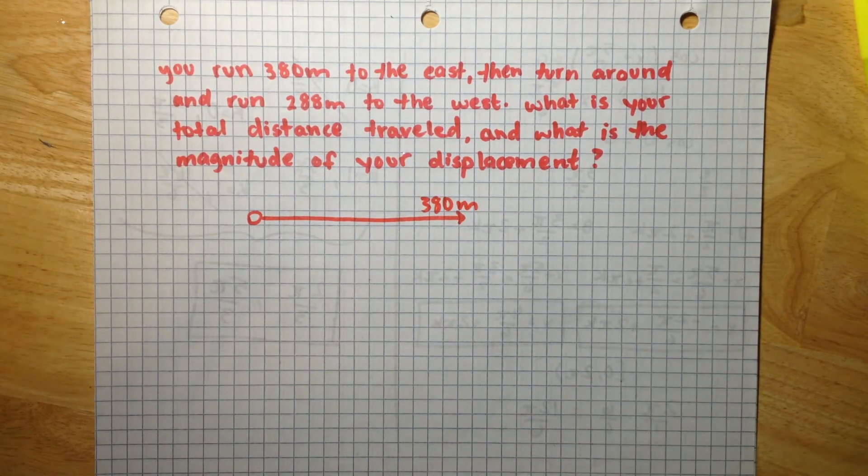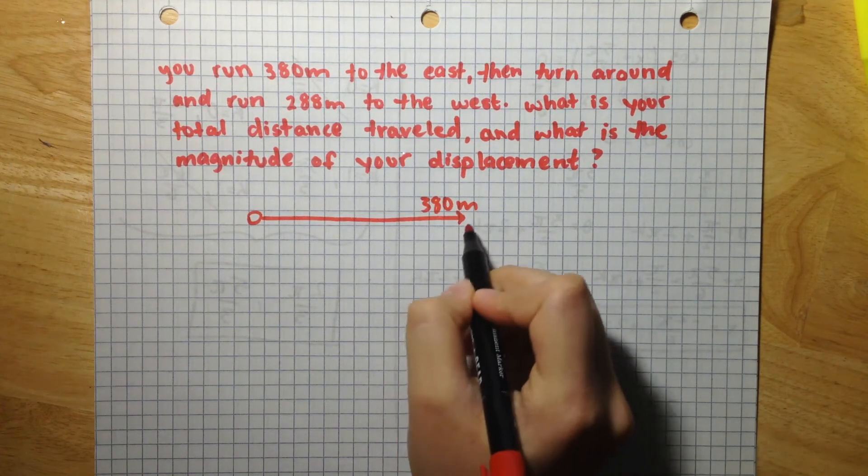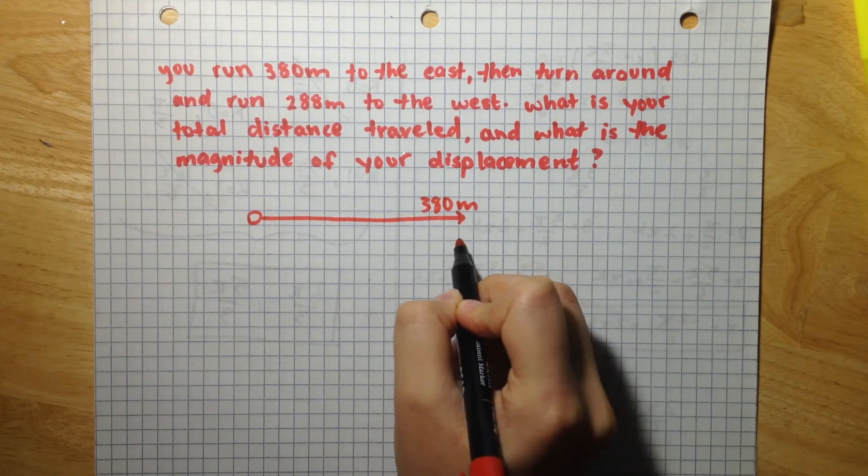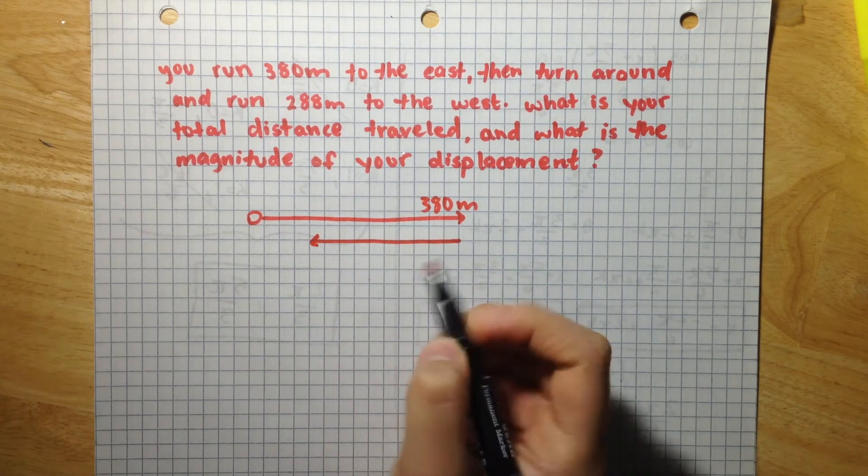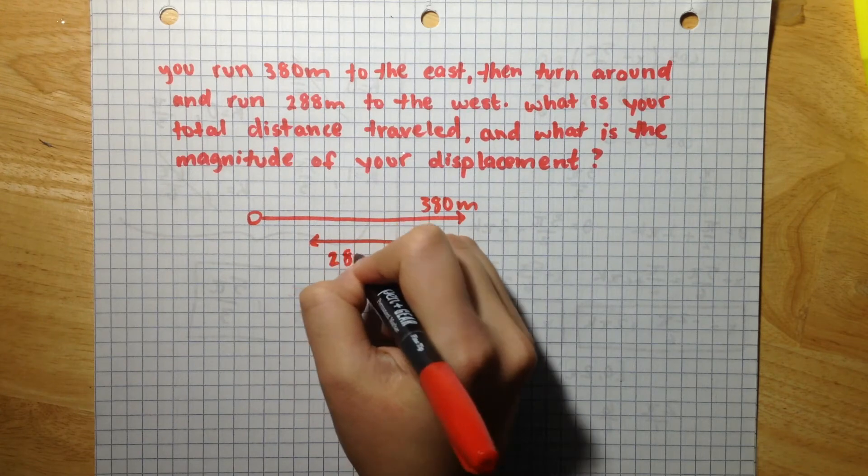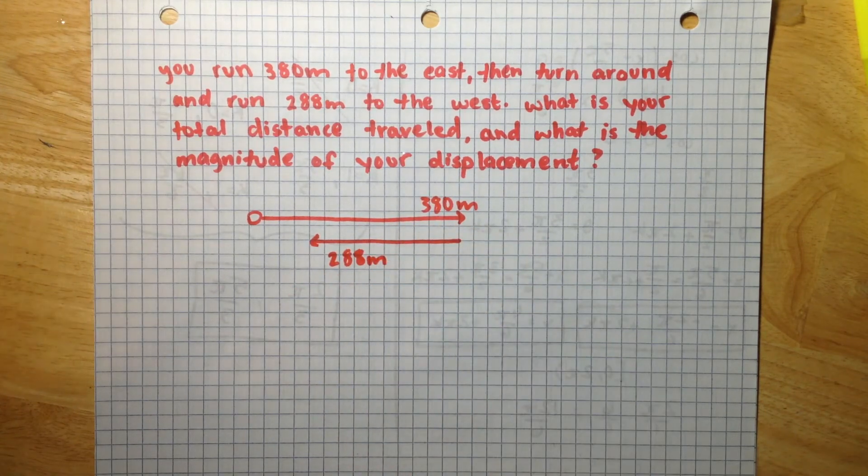and then you turn around and run 288 meters to the west. So, you turn around and you run, let's say this is 288 meters to the west.